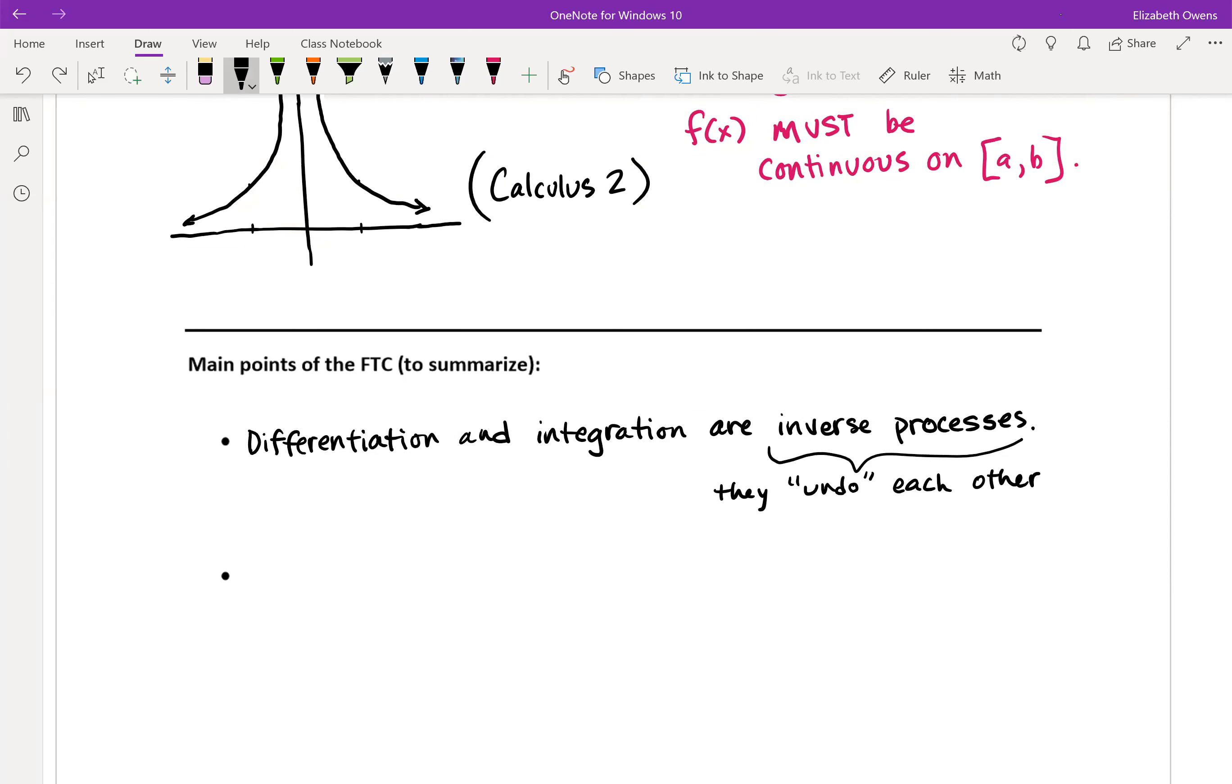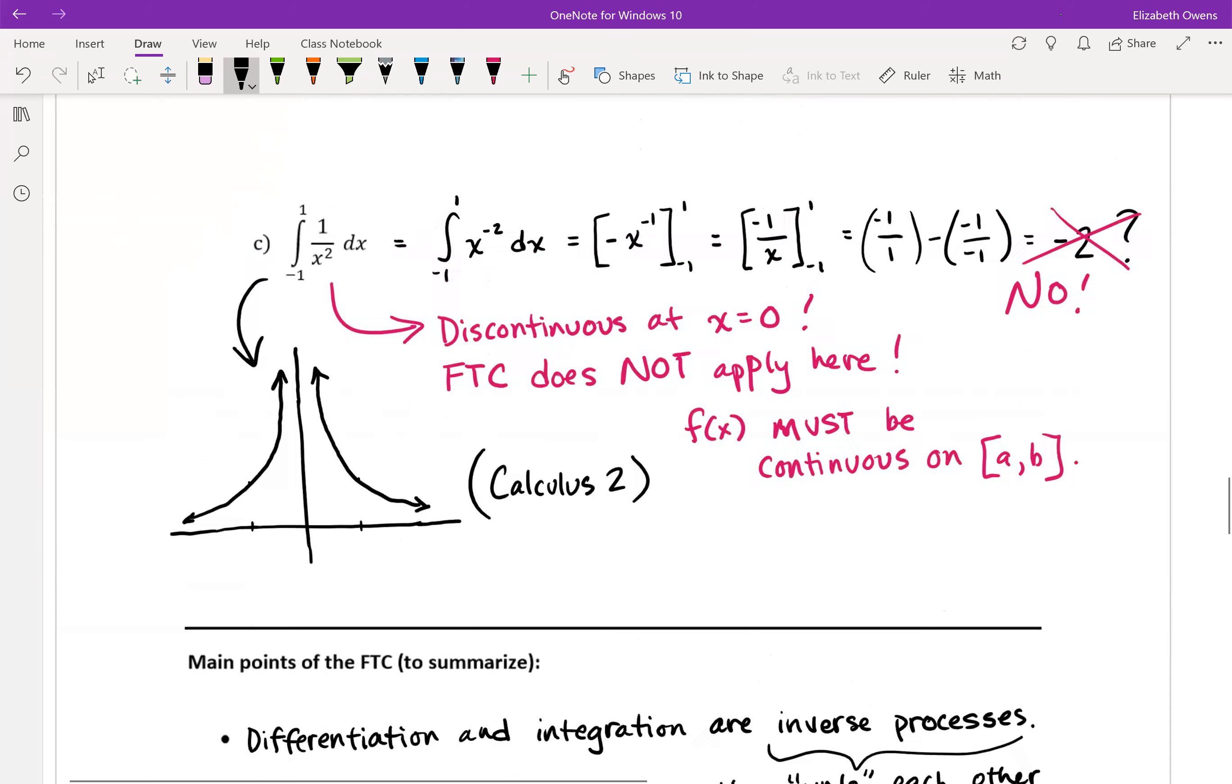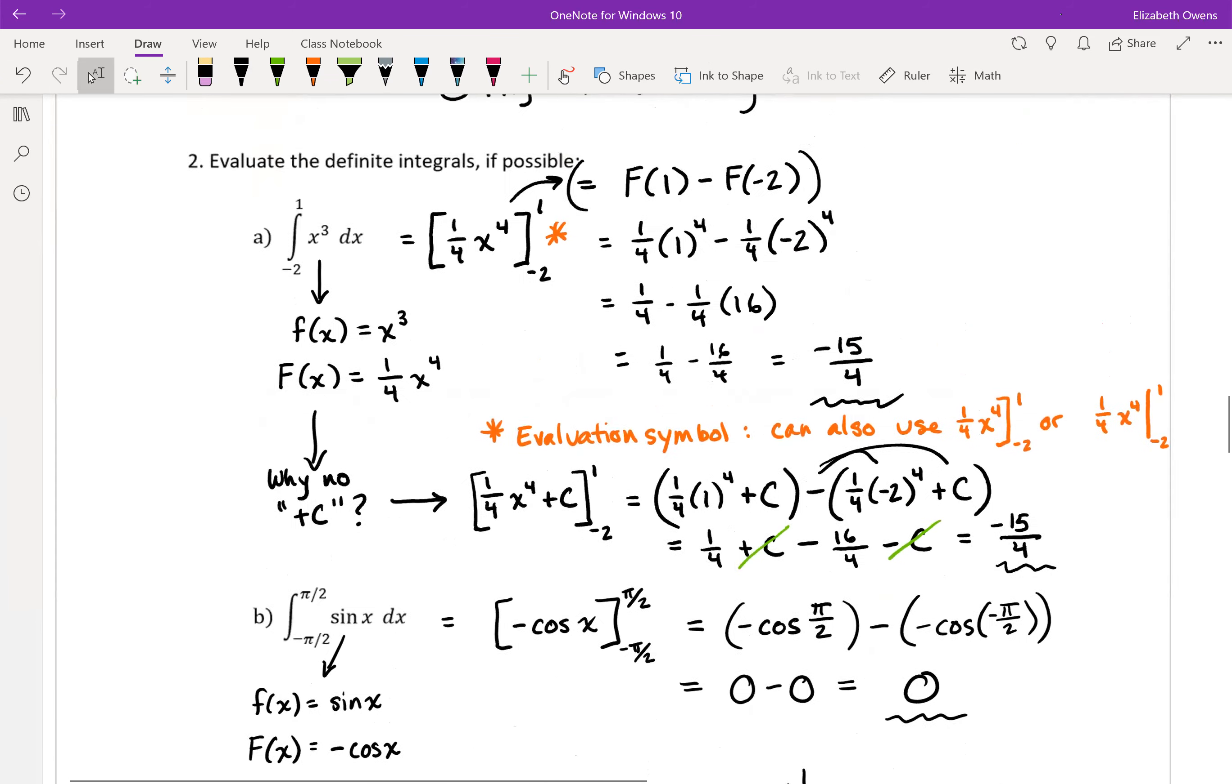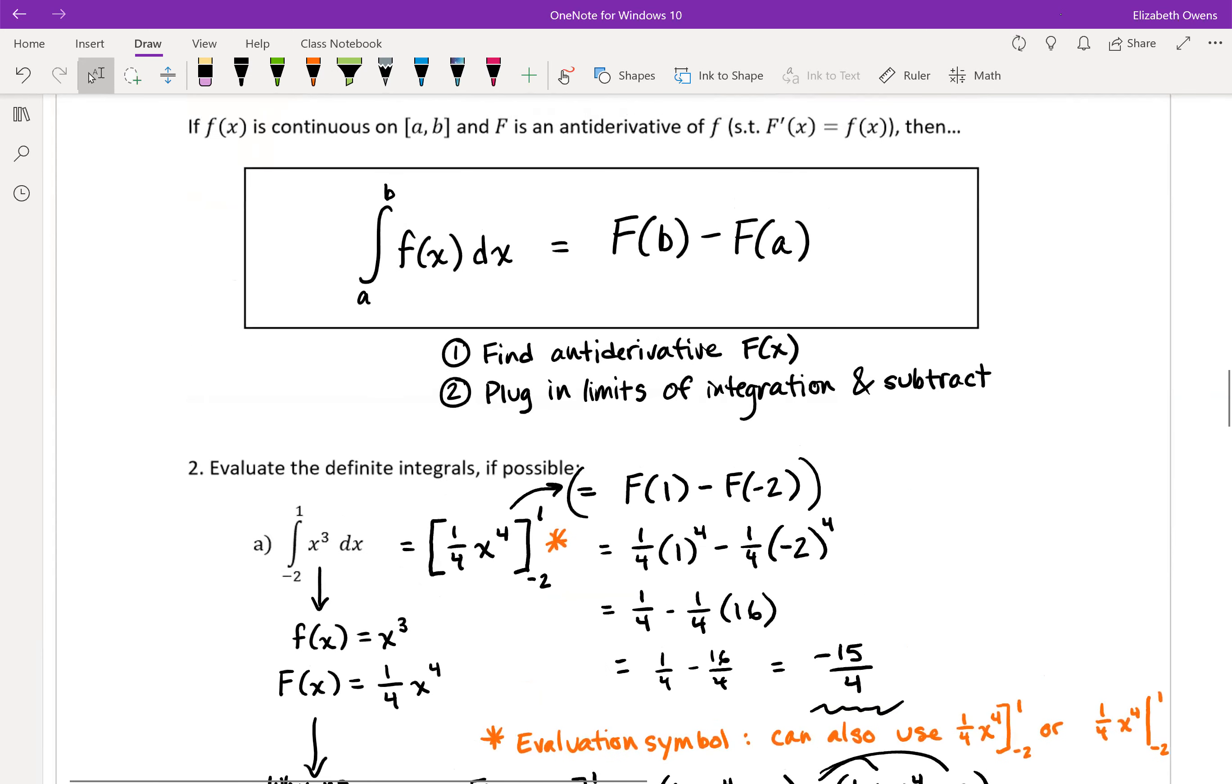And then the main point of FTC part two is that this is a quick way to evaluate definite integrals. It lets you no longer have to fuss with the Riemann sum process. We just get to find the antiderivative, as long as the function is continuous on the interval. Just find the antiderivative and plug in your lower and upper limits of integration, and subtract upper minus lower. And then you'll have your result, which is really pretty.